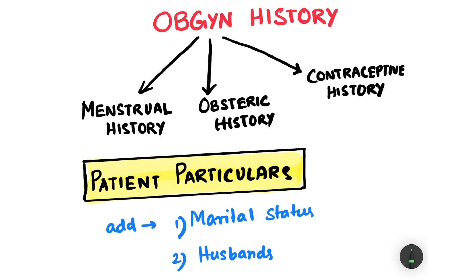Whenever you are talking to a female within the reproductive age group, you will find that many of their diseases are linked to their obstetric or gynecological history. So it's very important to take a proper, detailed, and well-informed obstetric and gynecological history. When we take an OB-GYN history, we do so under three headings: first, menstrual history; then obstetric history, related to childbirth; and finally, use of contraceptives.